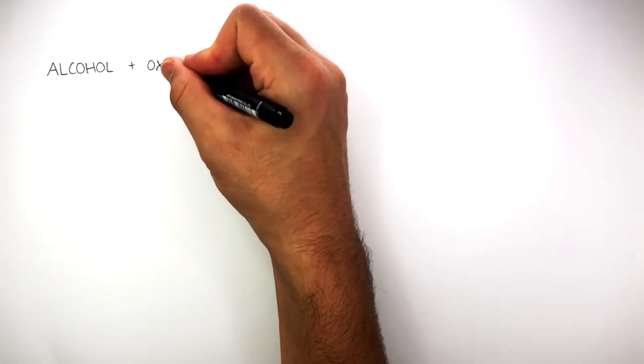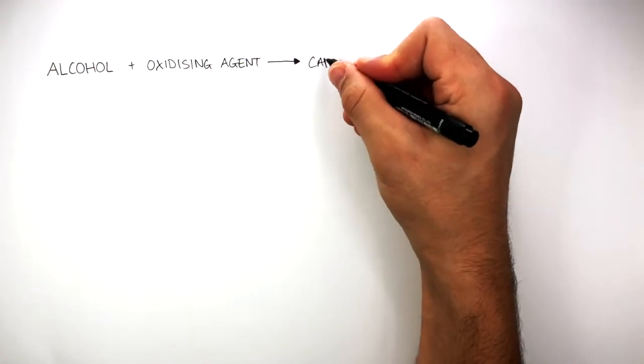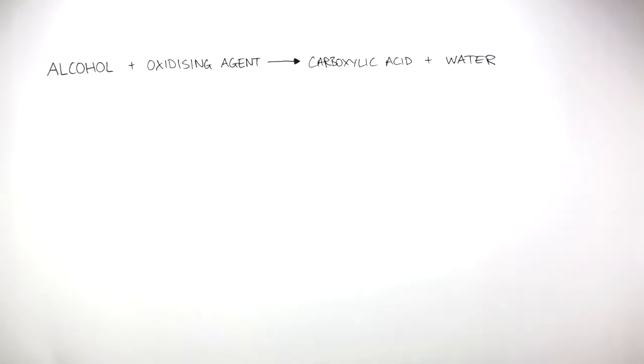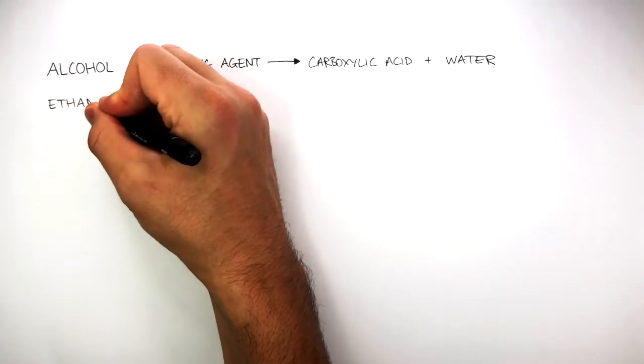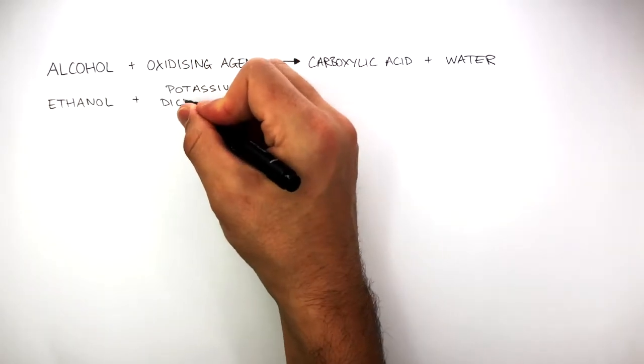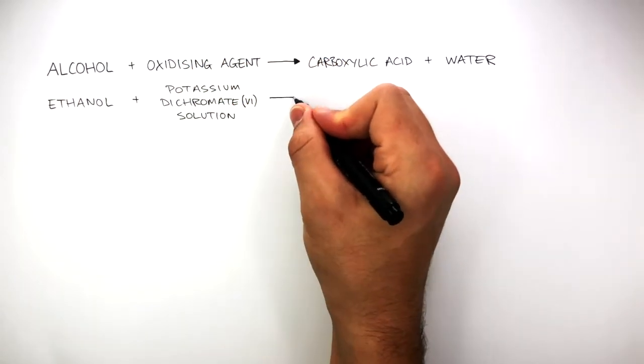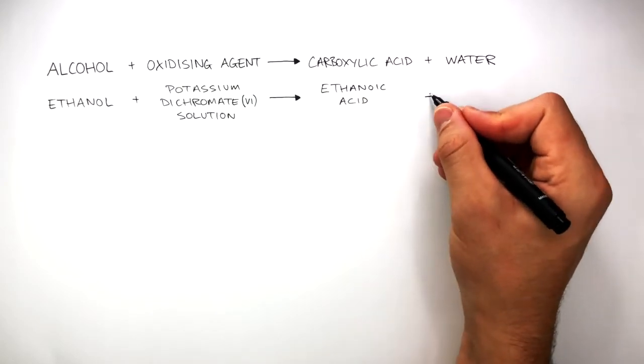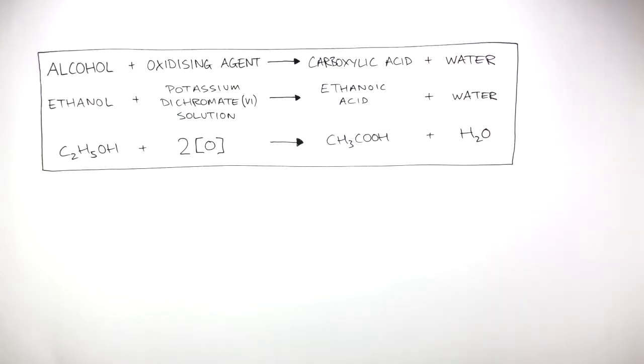An alcohol can react with an oxidizing agent to form a carboxylic acid and water. For example, ethanol can react with potassium dichromate 6 solution to form ethanoic acid and water. This is the balanced symbol equation where the capital O oxygen in brackets represents the oxidizing agent.